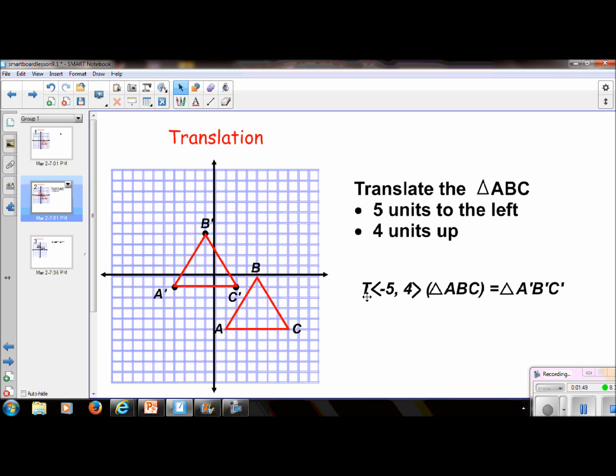So we're going to translate triangle ABC using this rule right here which would create this new triangle, A prime, B prime, C prime. So that's again what this notation is saying.